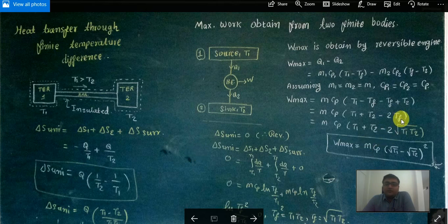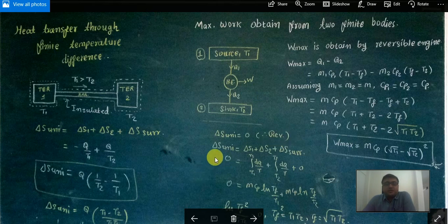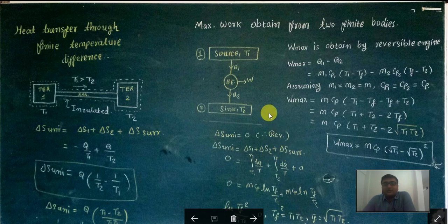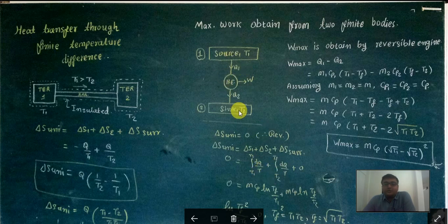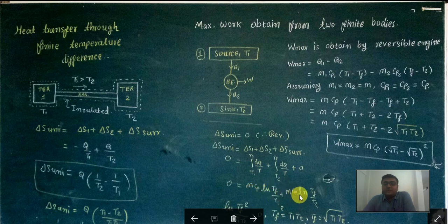Now, in order to find out the value of TF, we use the condition that delta S of the universe equals 0 for a reversible process. We want maximum work, which is only possible for the reversible process. So delta S universe equals delta S1 plus delta S2 plus delta S surrounding. As it is surrounded by an insulated layer, delta S surrounding equals 0. Since it is a finite body, delta S1 integrates from T1 to TF as dQ/T, and delta S2 integrates from T2 to TF. Substituting dQ with M·Cp·dT: